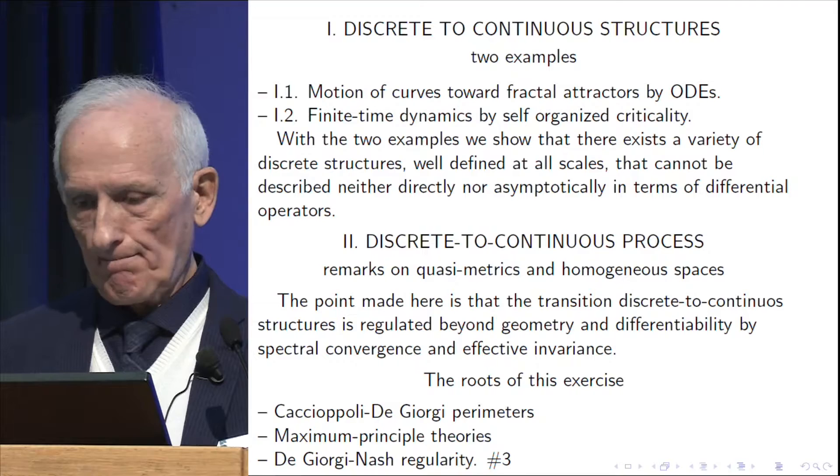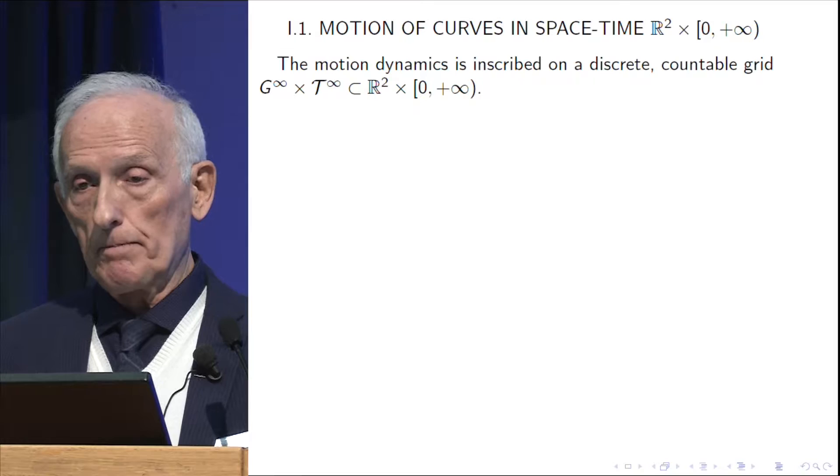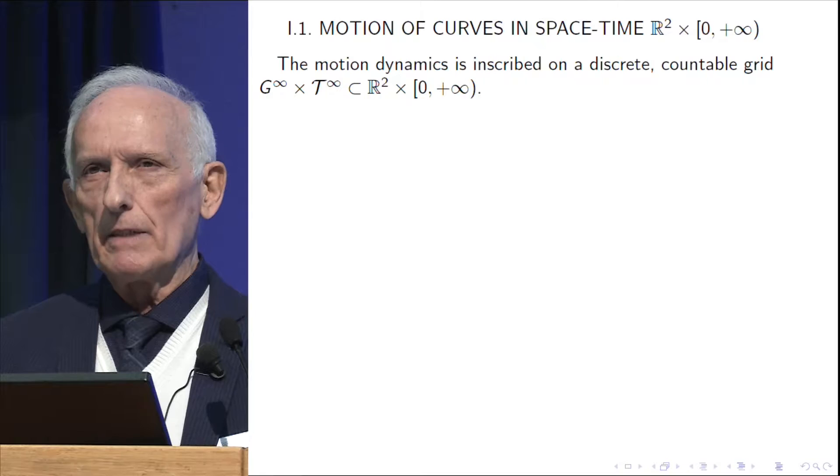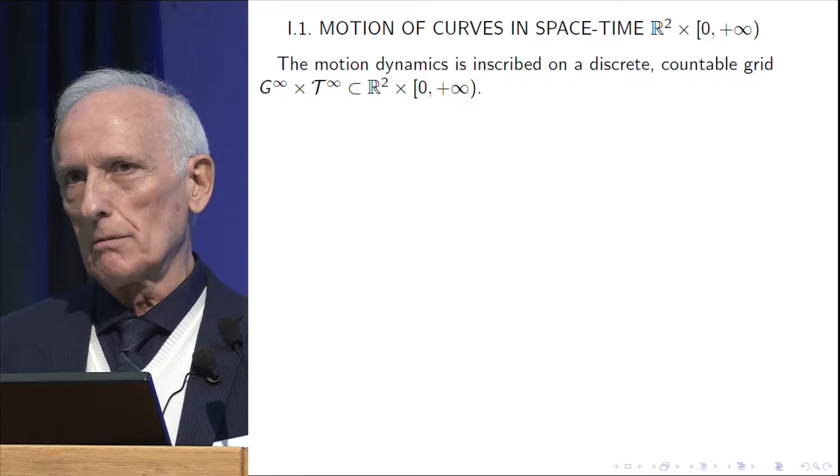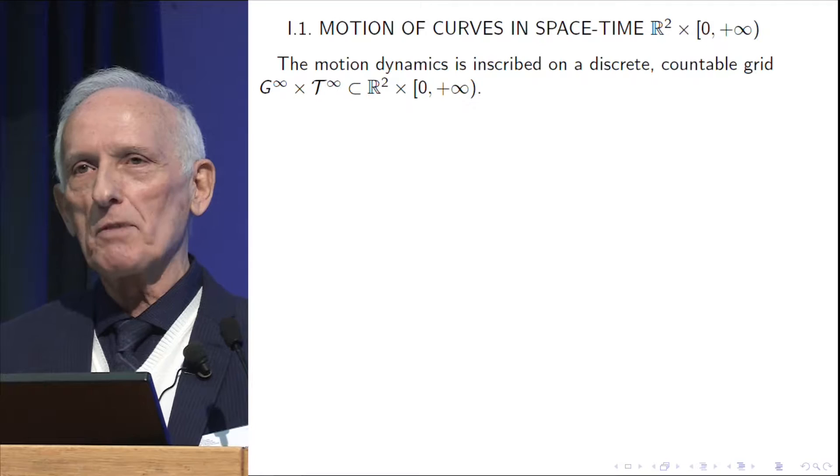So I go to my first example. Now the examples are discrete, so there are no derivatives. Derivatives are wonderful to in one line you write the Einstein equation. When you work with sequences, you have to write sums. So I apologize, it would be a bit ugly to read and to follow.